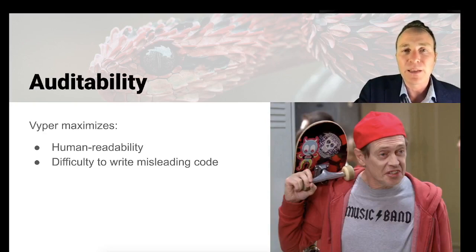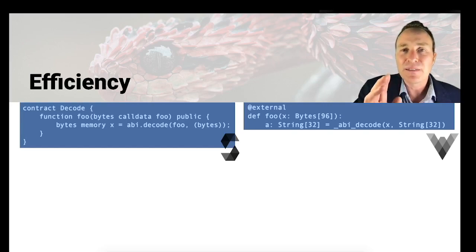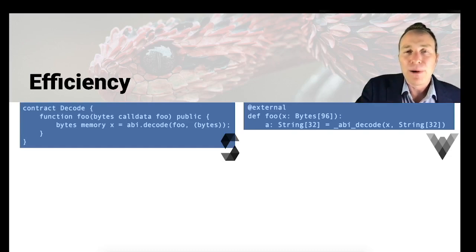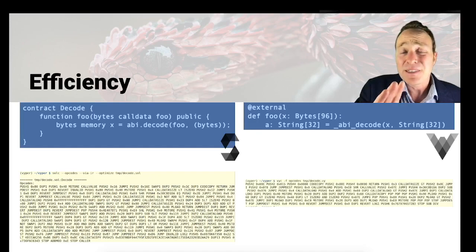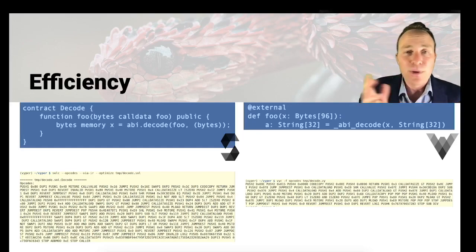A Viper contract has greater auditability because Viper has maximized human readability and made it difficult to write misleading code. Beyond readability, let's talk about pure efficiency. The Viper compiler is screamingly efficient — this is not something that Solidity has terribly optimized. If you compare the Solidity code on the left and the equivalent Viper code on the right, you'll notice that the EVM bytecode for Solidity is an order of magnitude larger than that of Viper. This has significant savings, most notably in gas. In 2022, it's generally going to be cheaper to execute a contract using Viper, though if Solidity decides to prioritize this, that advantage will catch up.